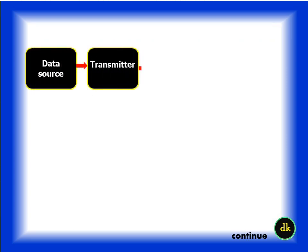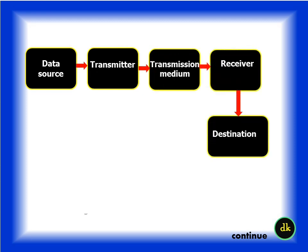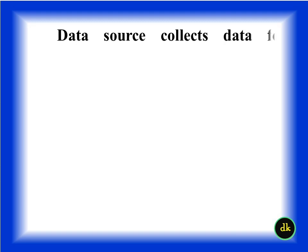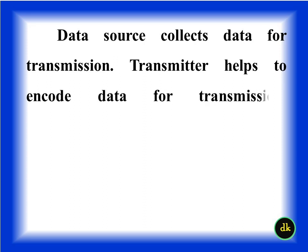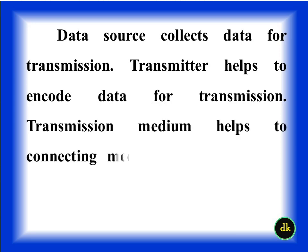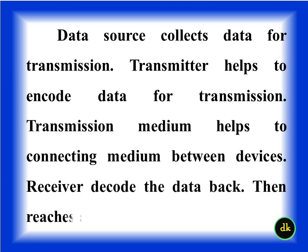Data flows from the data source, then to the transmitter, through the transmission medium, to the receiver, and finally to the destination point. The data source collects data for transmission. The transmitter encodes data for transmission. The transmission medium is the connecting medium between devices. The receiver decodes the data back, which then reaches the final destination.